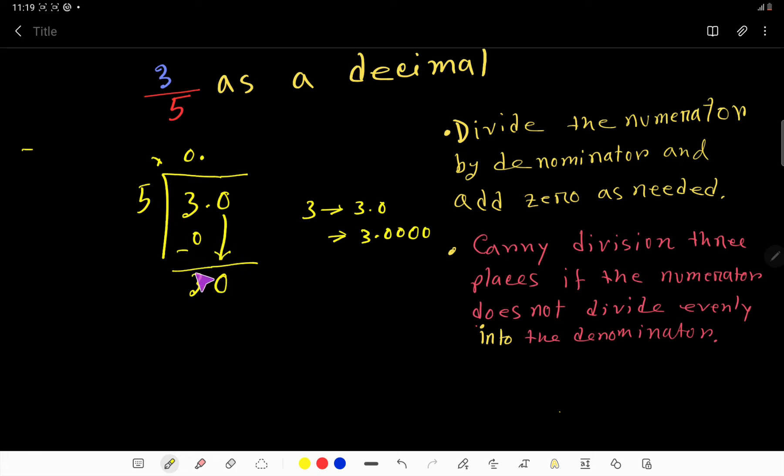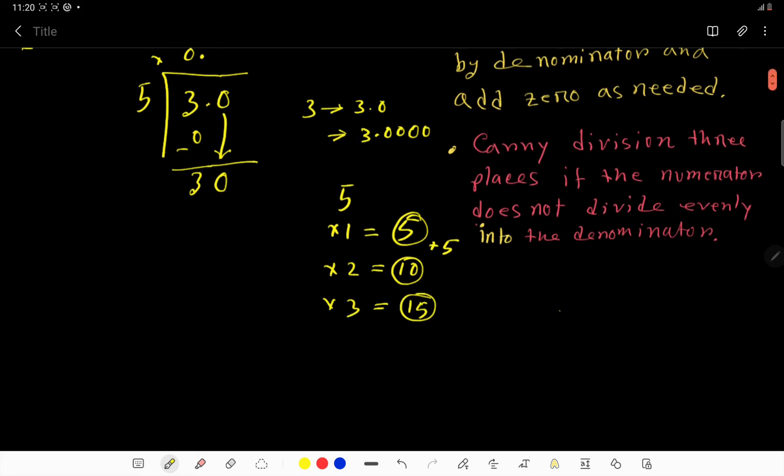Now we have to determine 5 goes into 30 how many times. We need the multiplication table for 5. 5 times 1 is 5, 5 times 2 is 10 - just add 5 with each step. 5 times 3 is 15.